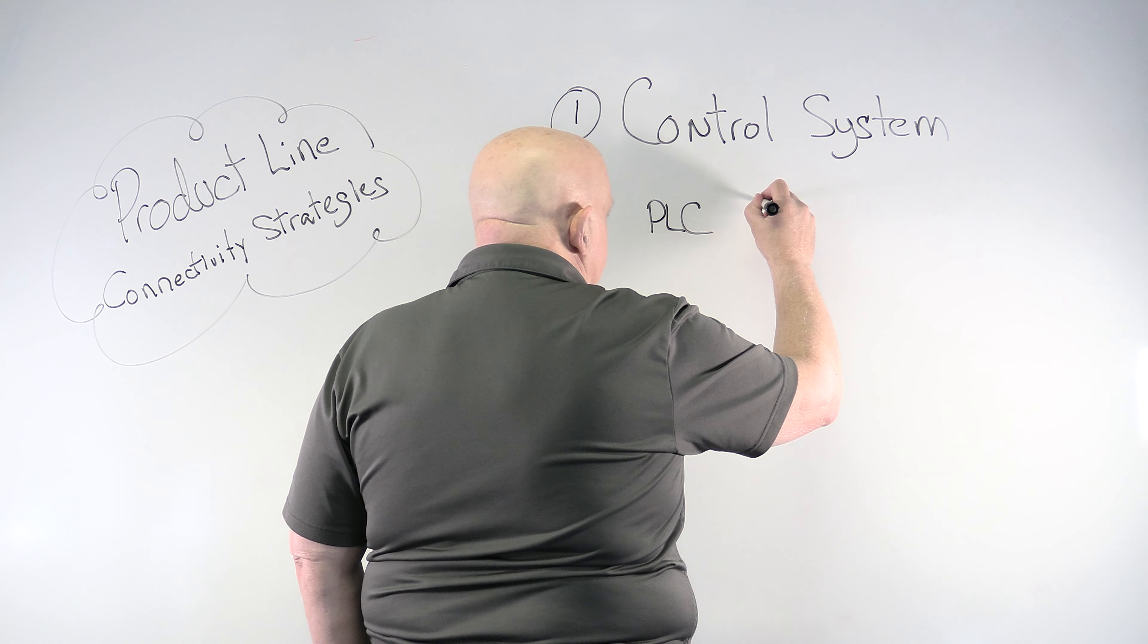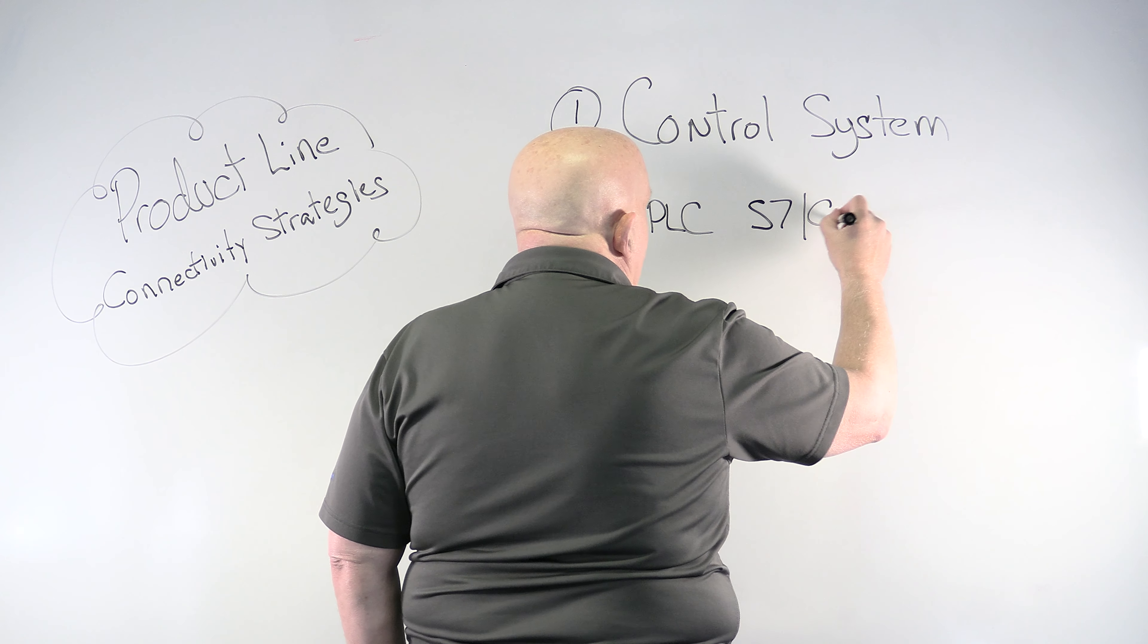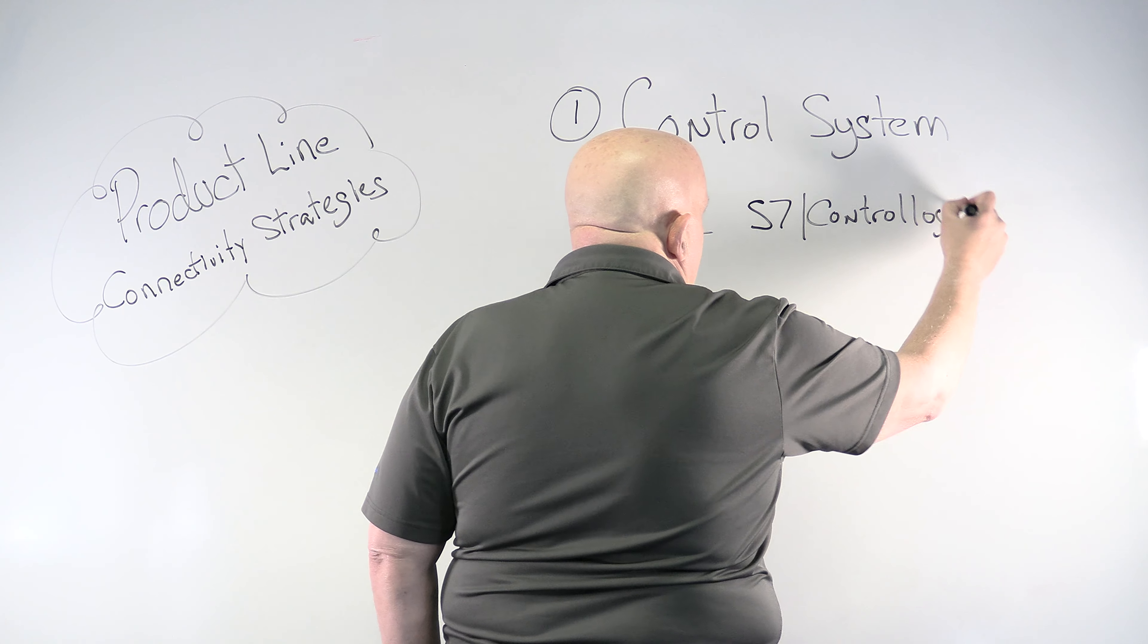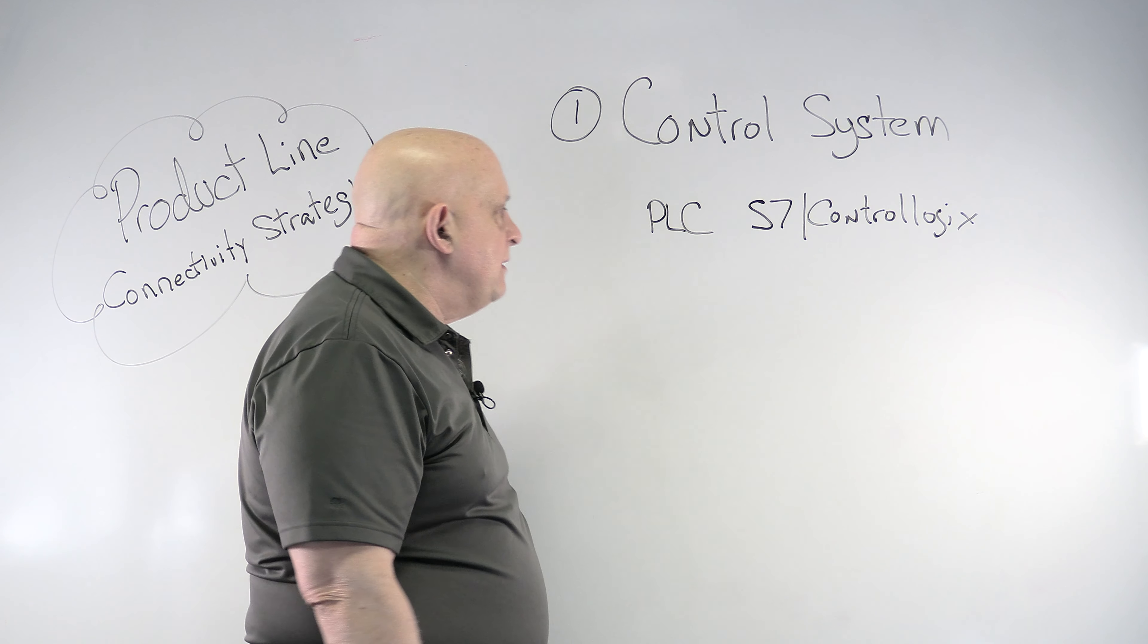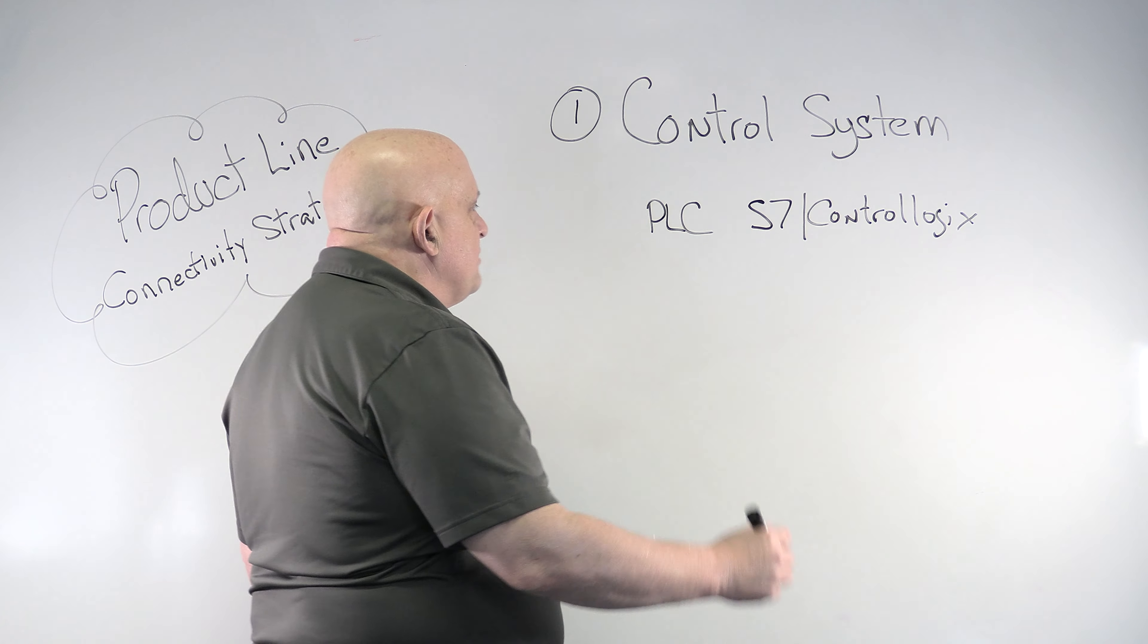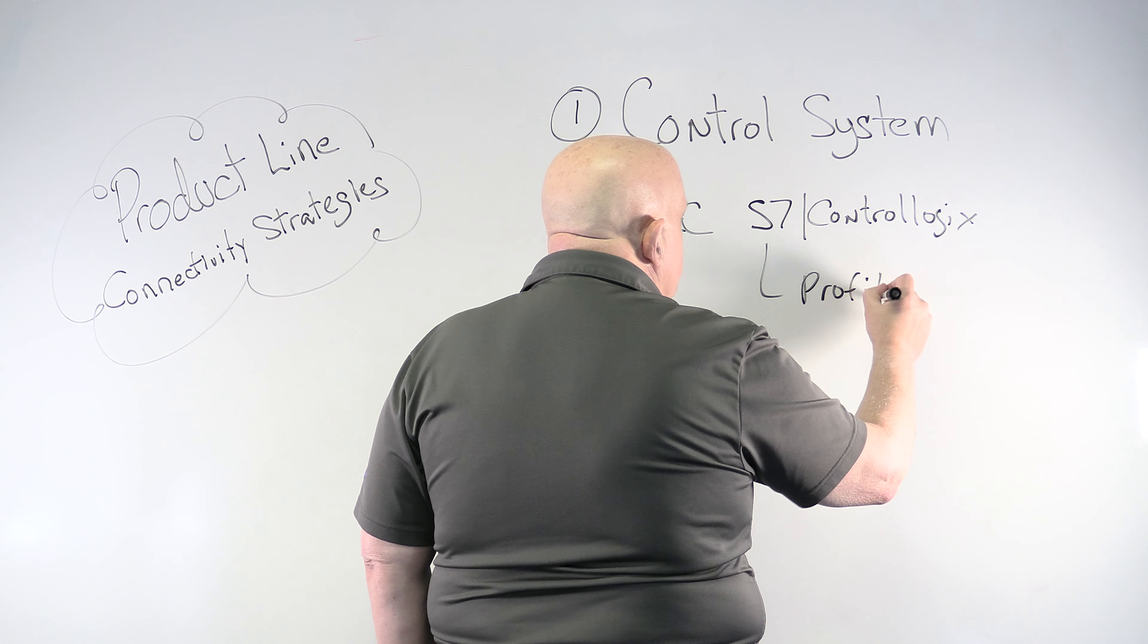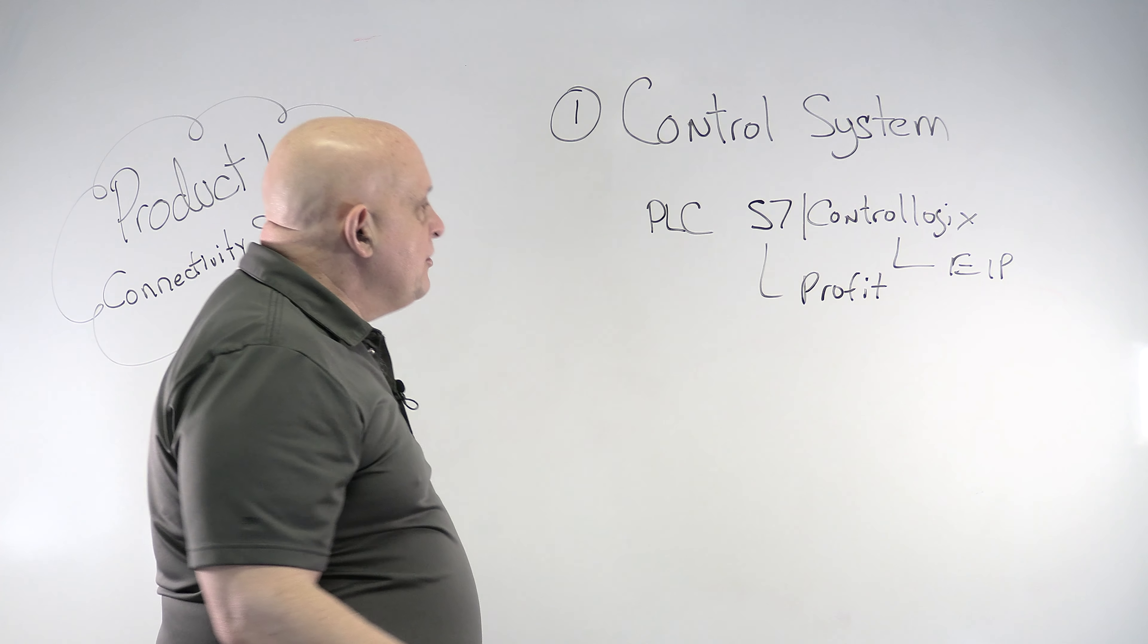And that's going to be either probably either a Siemens S7 or it's going to be a ControlLogix from Allen Bradley. Those are, that covers about 90% of the market, maybe even 95% of the market if you don't count Asia. So S7s talk Profinet and ControlLogix talks Ethernet IP.